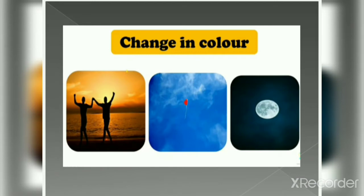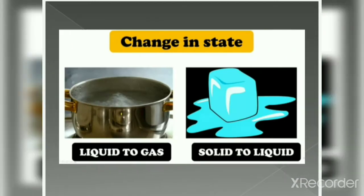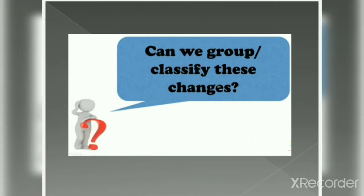When we put water to boil, after some time it starts forming vapor — the liquid is changing into a gaseous state. Similarly, when ice cubes melt, the solid state changes into liquid state. This is change in state. Now we want to know: can we group or classify these changes? Is there any similarity between these changes? Let's find out.